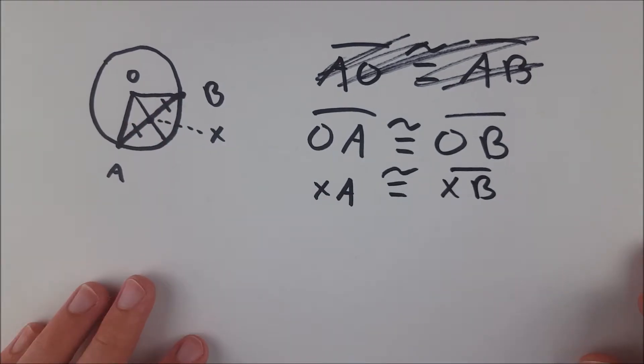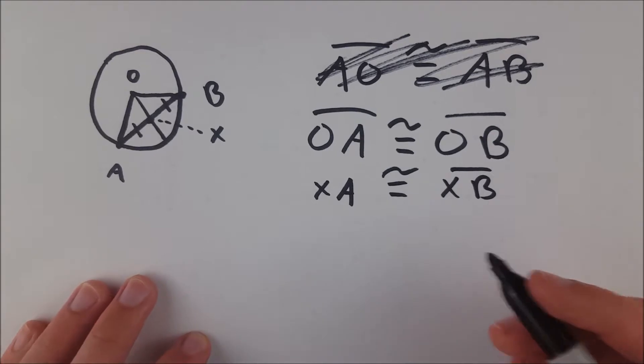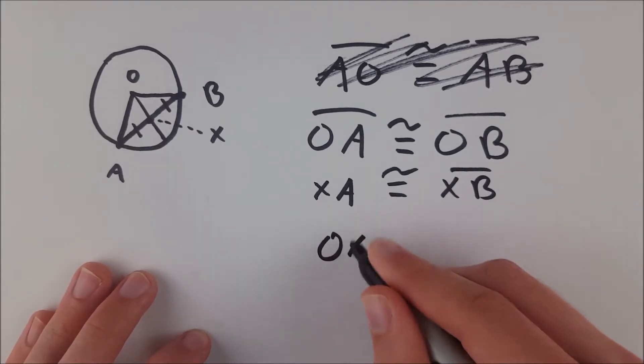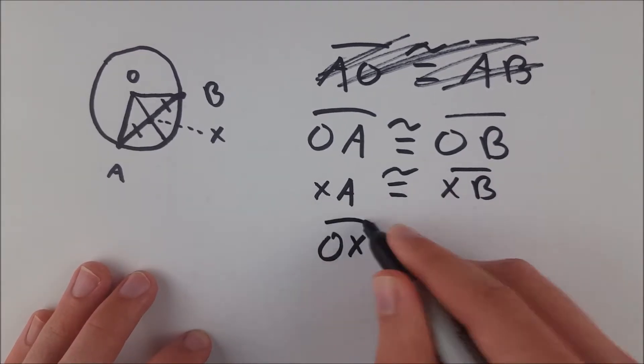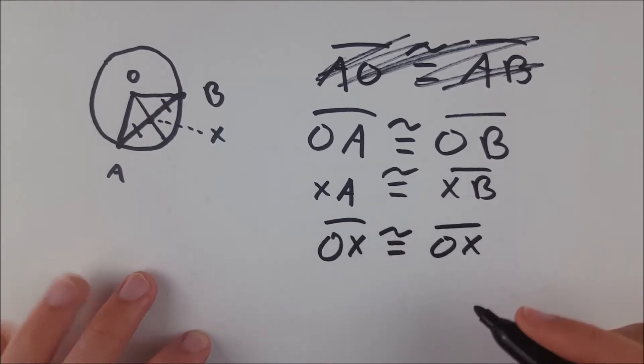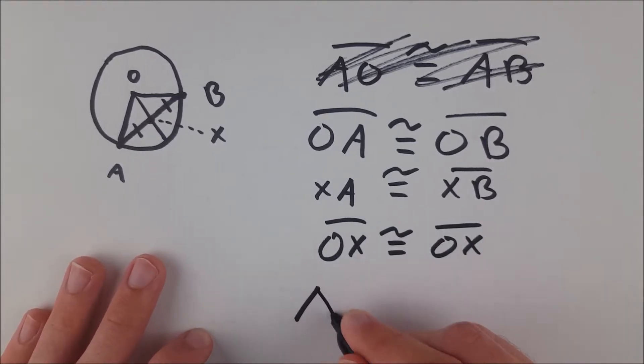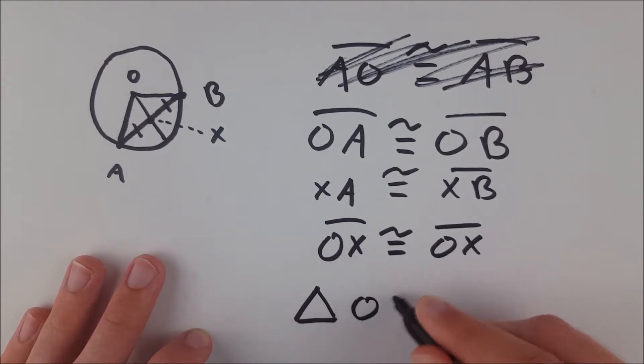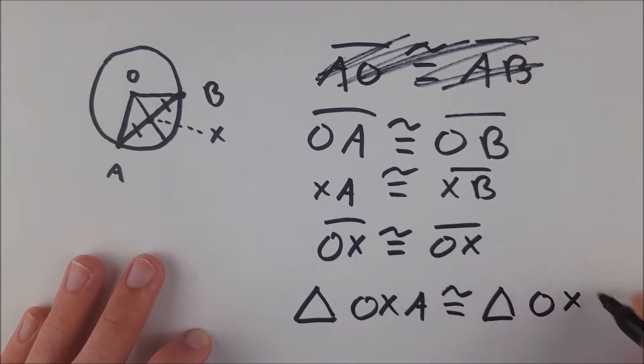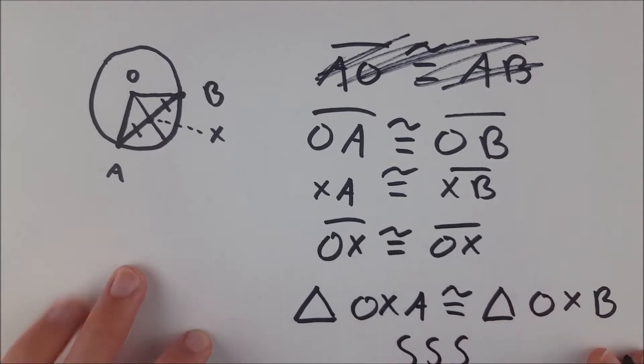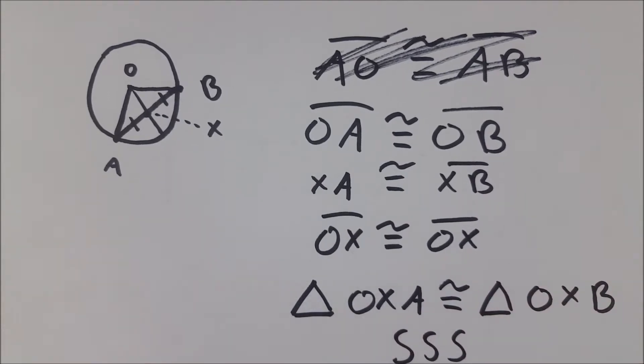So there's two sides of the triangles being congruent, and then the last side, of course, is OX, and congruence is reflexive, so we know that OX is congruent to itself, and therefore we know that triangle OXA is congruent to triangle OXB by the side, side, side triangle congruence postulate.